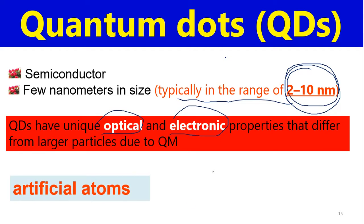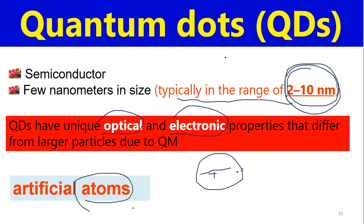Why are quantum dots called artificial atoms? Because an atom has a nucleus and electrons — a very simple structure — and an atom is also just a few nanometers in size. So quantum dots are basically artificial atoms. When these artificial atoms combine, they emit molecules, which we call artificial molecules.